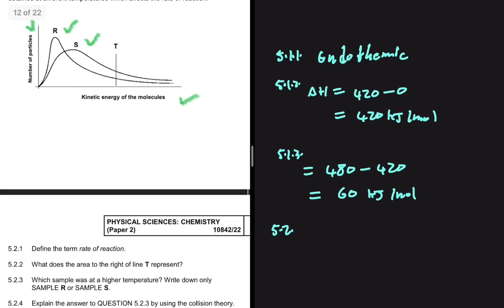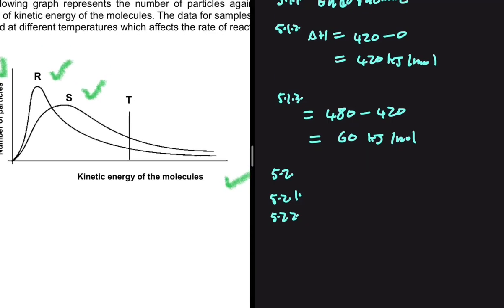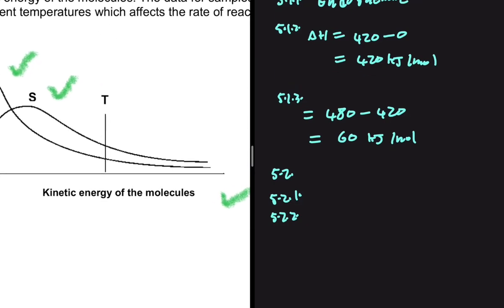Question 5.2.1 asks us to define the term rate of reaction. That is the change in concentration of the reactants or products per unit time — it is actually that simple. For 5.2.2, what does the area to the right of line T represent? Let's go to our graph and see what we have.